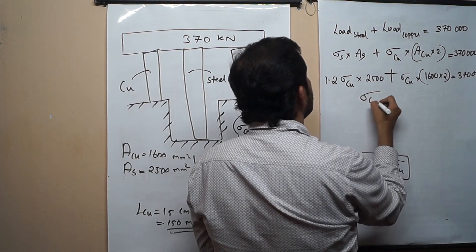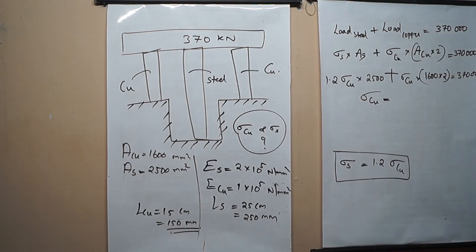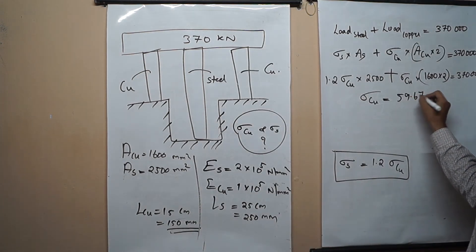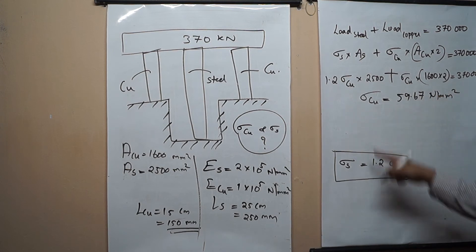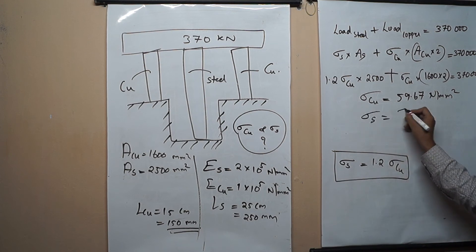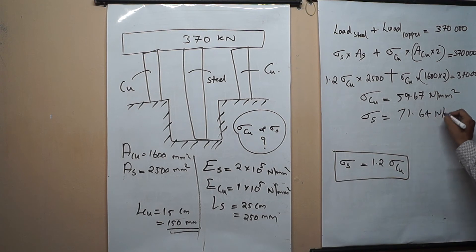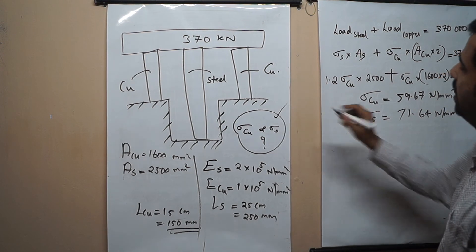Solving this equation, we get sigma_copper equals approximately 59.67 N/mm². Substituting this into sigma_steel = 1.2 sigma_copper, we get sigma_steel equals 71.64 N/mm². So we have our answers.